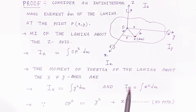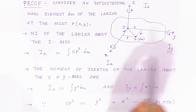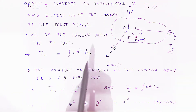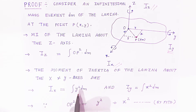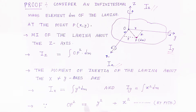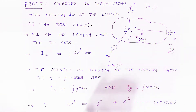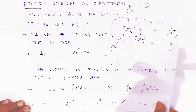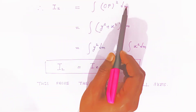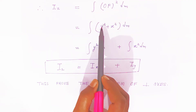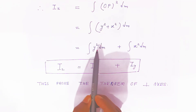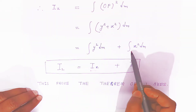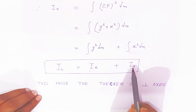So Iz equals integration of OP squared DM, Ix equals integration of y squared DM, and Iy equals integration of x squared DM. Now by Pythagoras, since it is a right-angle triangle, OP squared equals y squared plus x squared. So Iz equals integration of OP squared DM equals integration of (y squared plus x squared) DM. When you integrate, it is integration of y squared DM plus integration of x squared DM. Integration of y squared DM is the moment of inertia along the X axis, and integration of x squared DM is the moment of inertia about the Y axis.